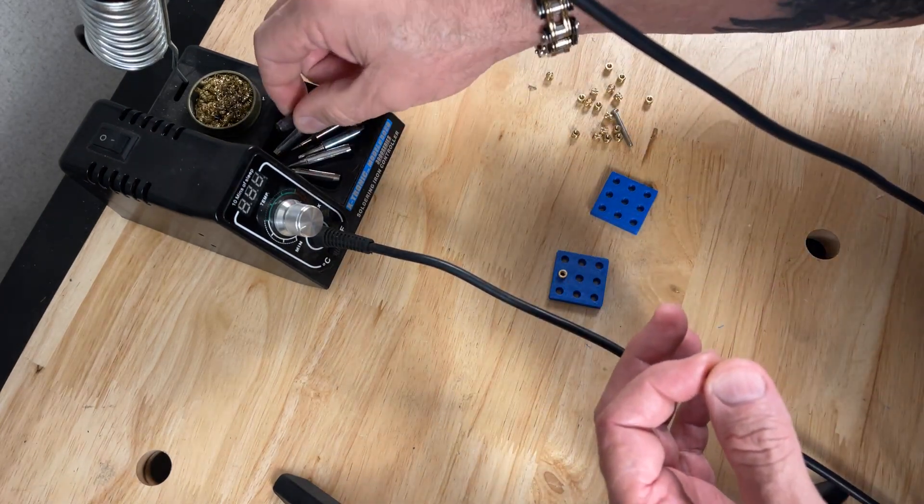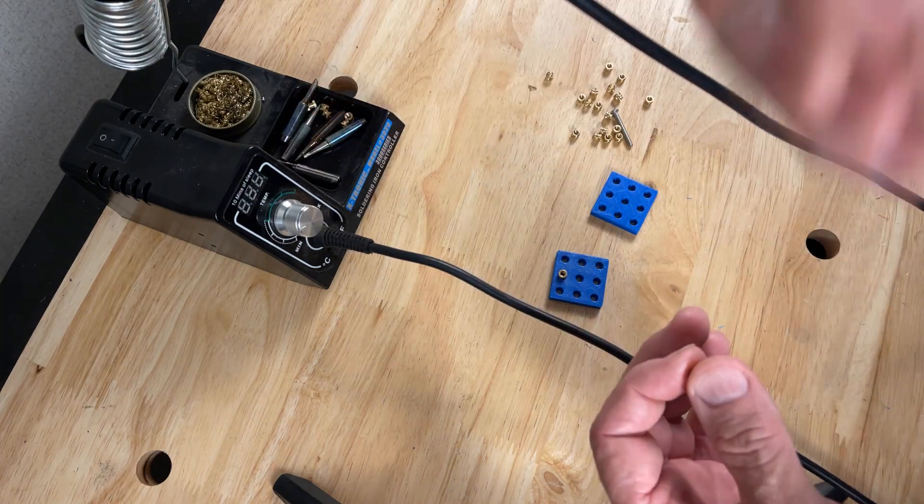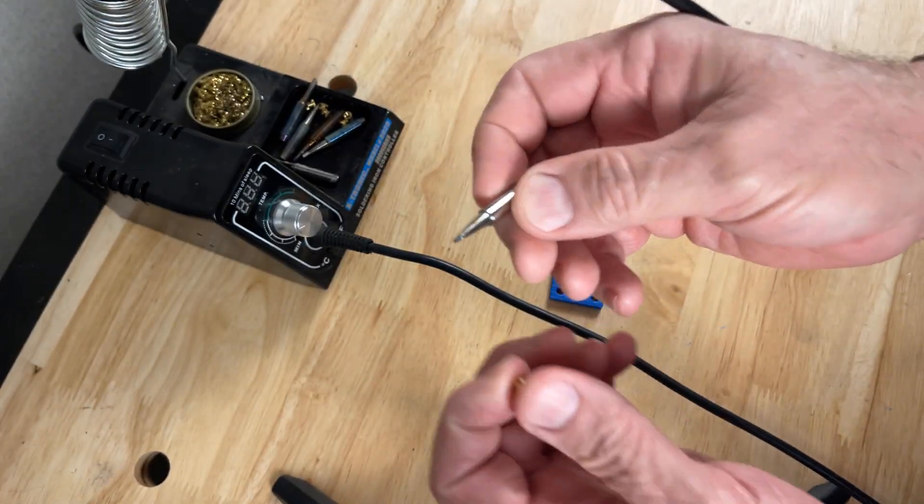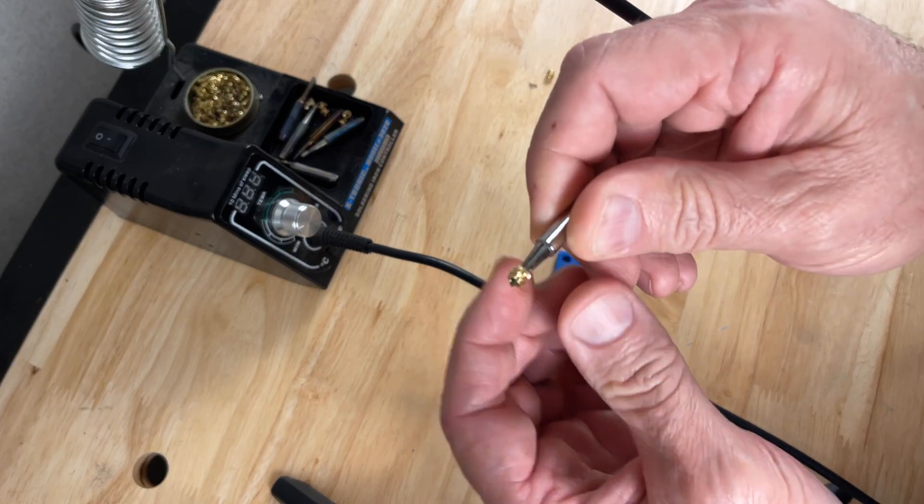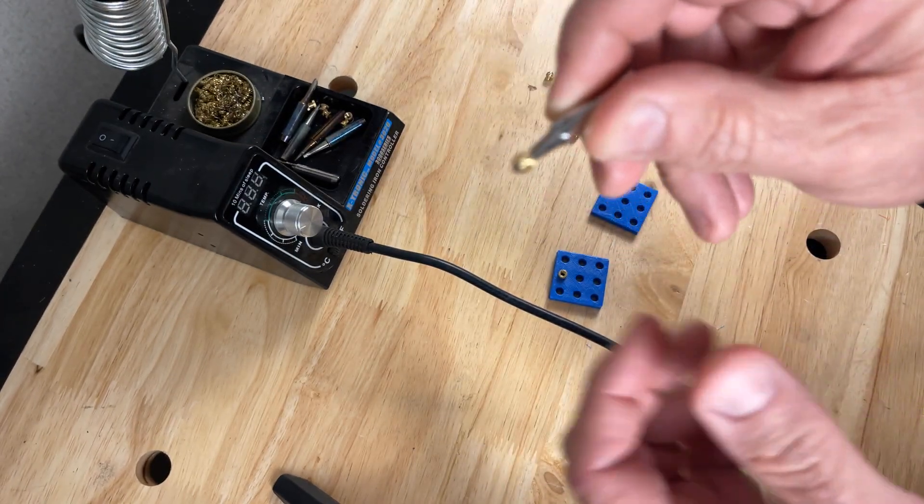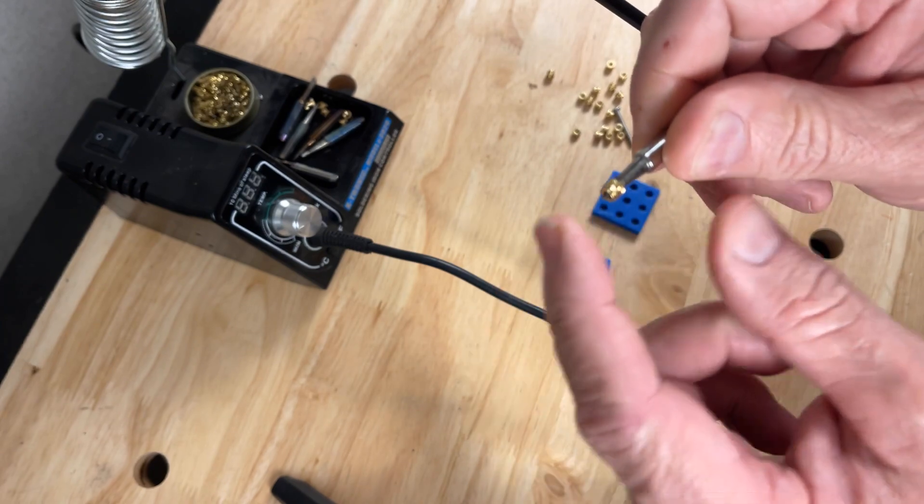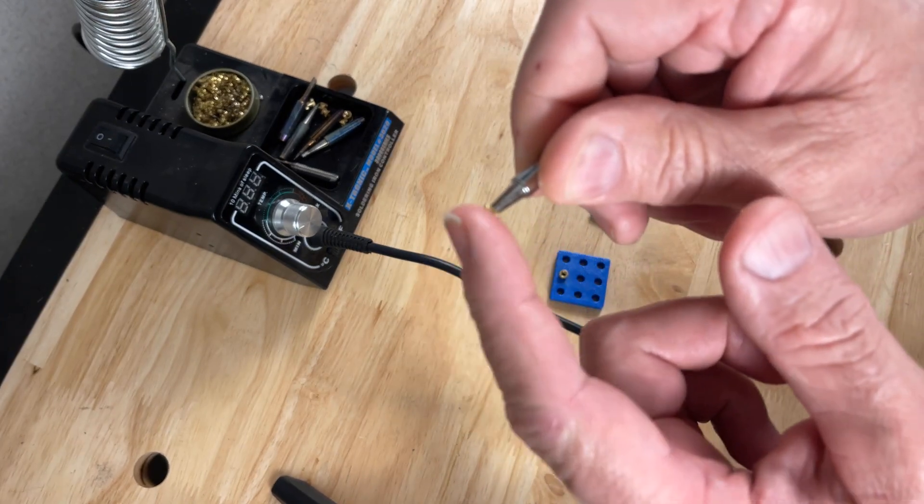You can use a pointed tip just like this right here, and it goes right down the threaded insert just like that. Now if you got one that's a really skinny tip and it sticks out a long ways from this end.